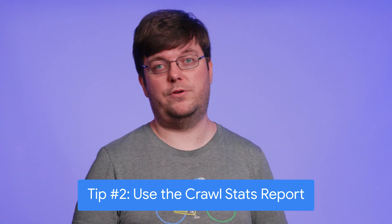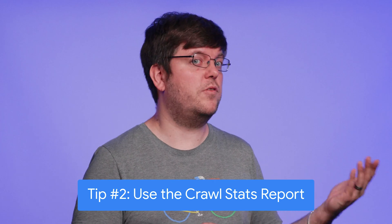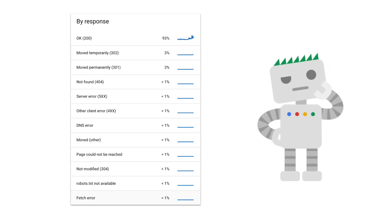Tip number two is to use the crawl stats report — more specifically, the response section in that report — to see how your server responds to crawl requests. Pay attention to the responses your server gave to Googlebot, especially a high number of 500 responses, fetch errors, timeouts, DNS problems, and other things.